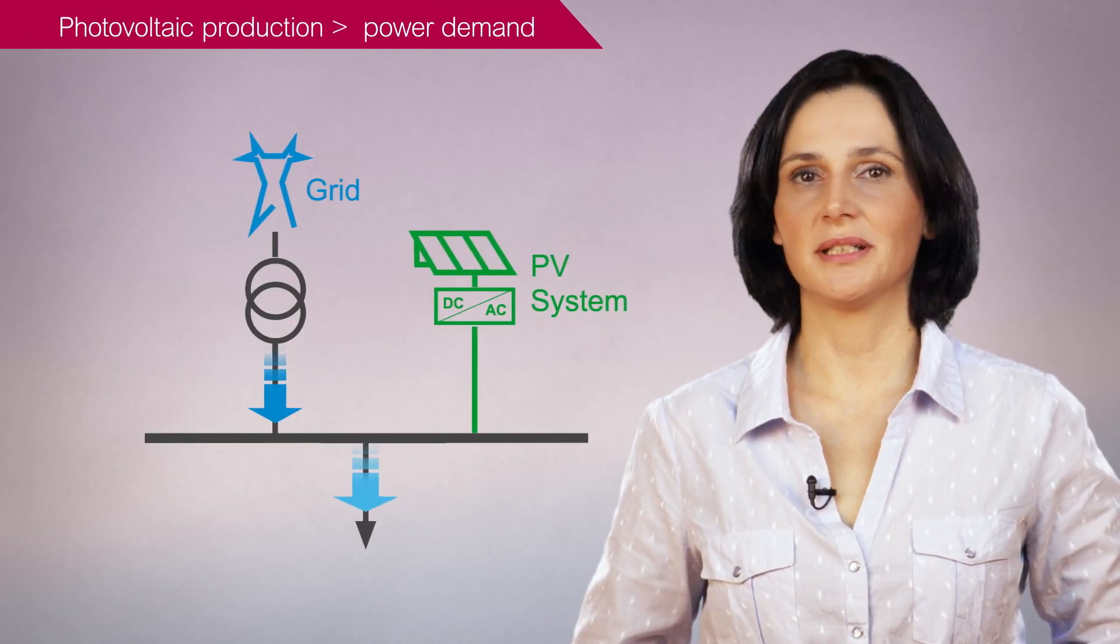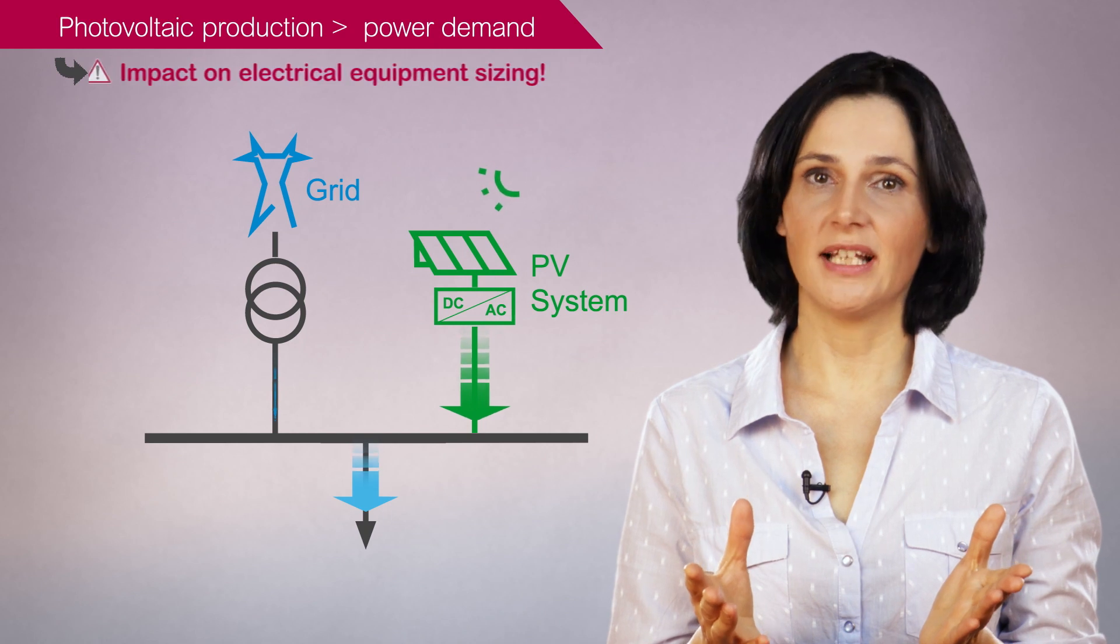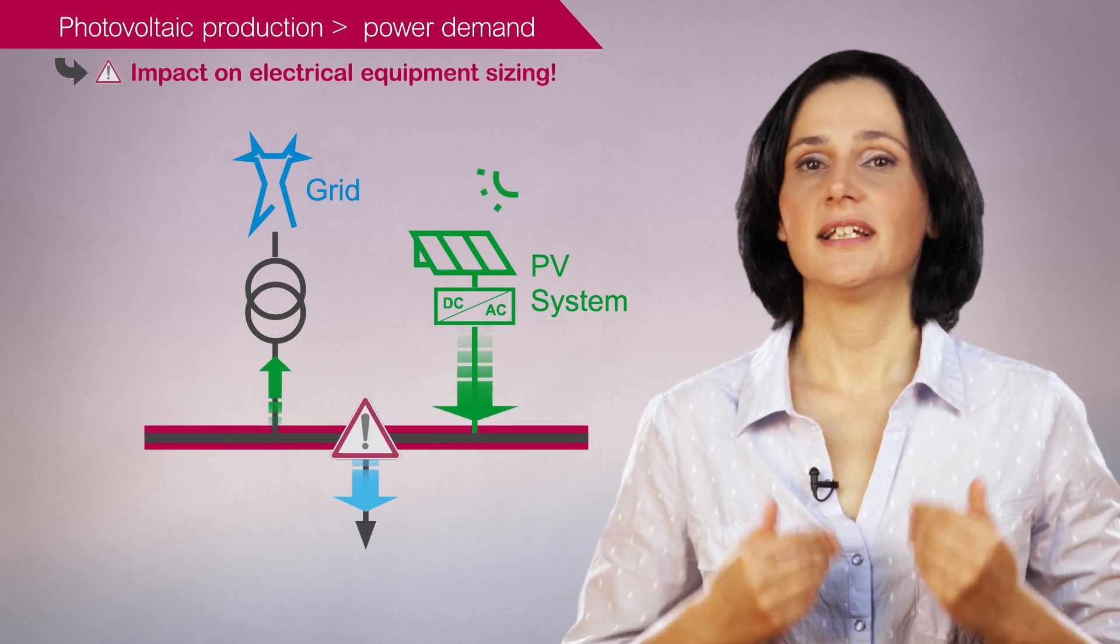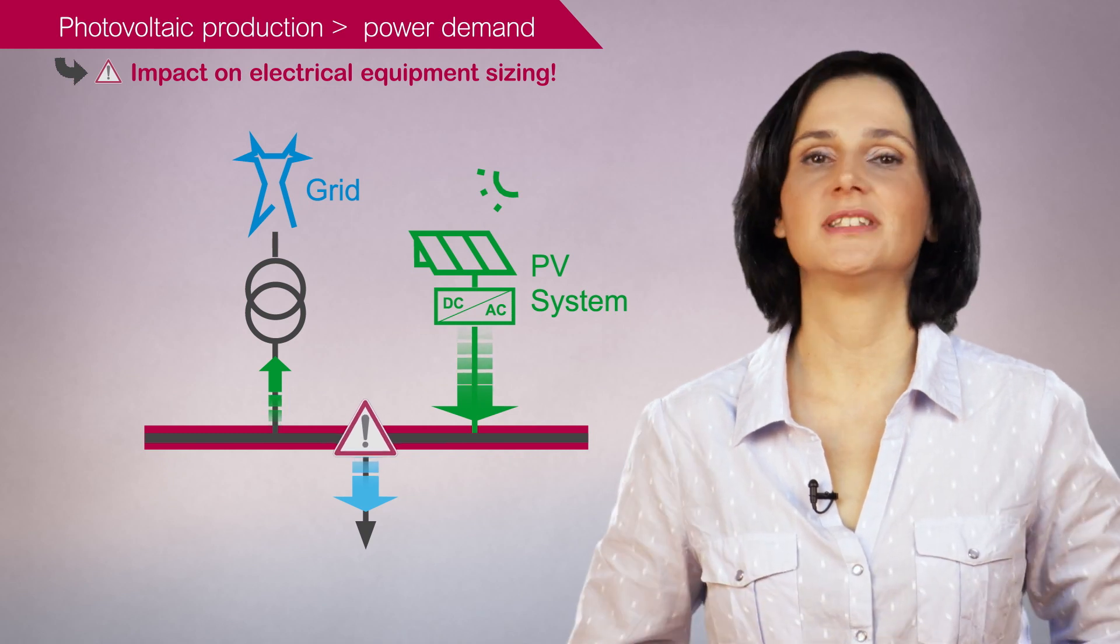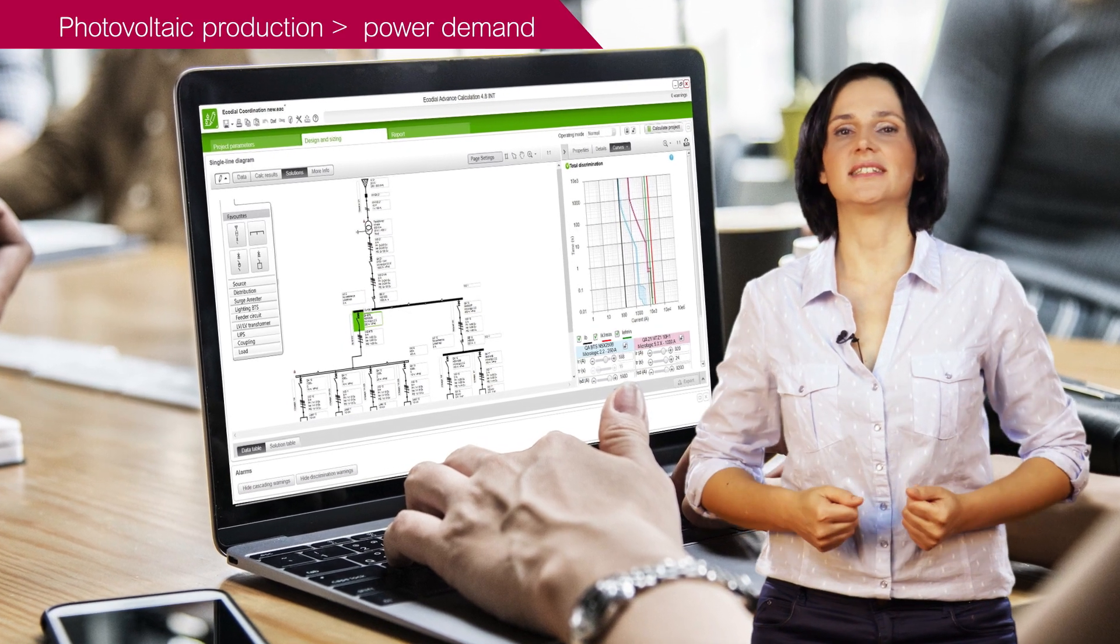On the other hand, when the photovoltaic production capacity exceeds the power demand, the impact on the electrical installation sizing must be taken into account as current and power flows in the installation can be higher. In new construction, the higher power and current flow constraints are considered at early design phase and the installation can be sized accordingly.